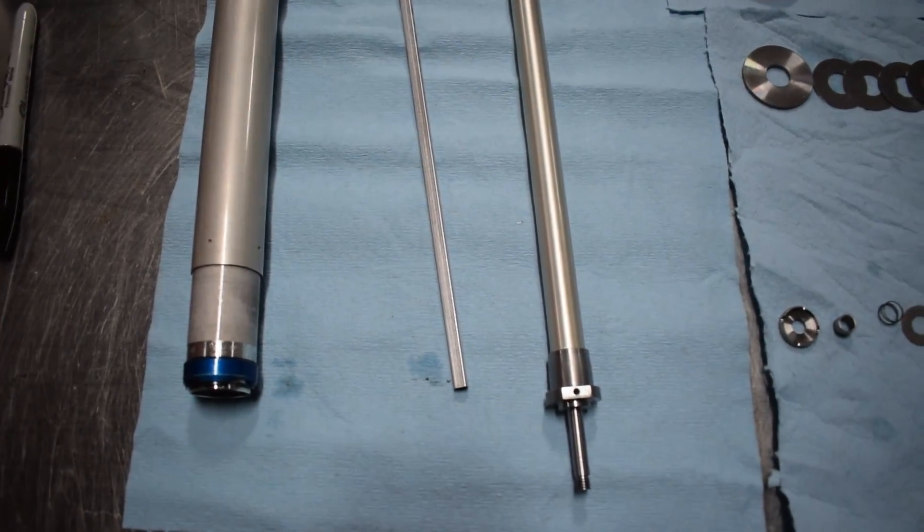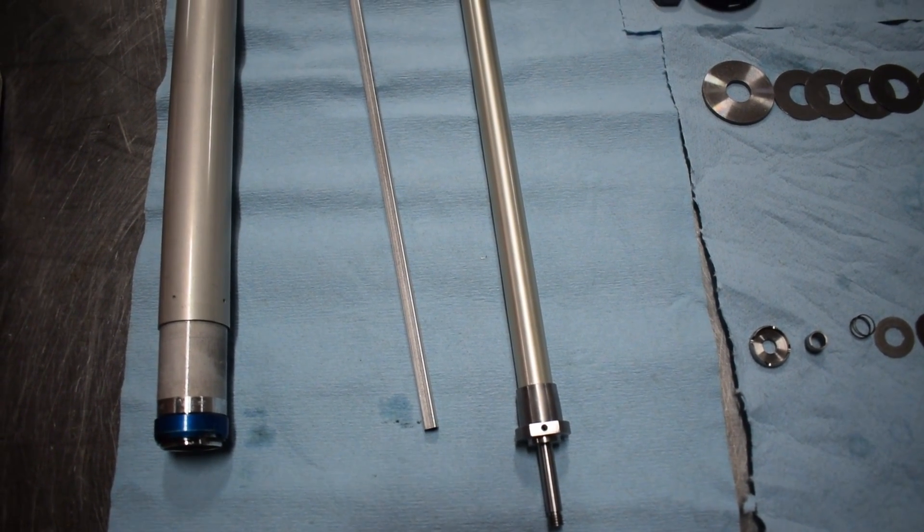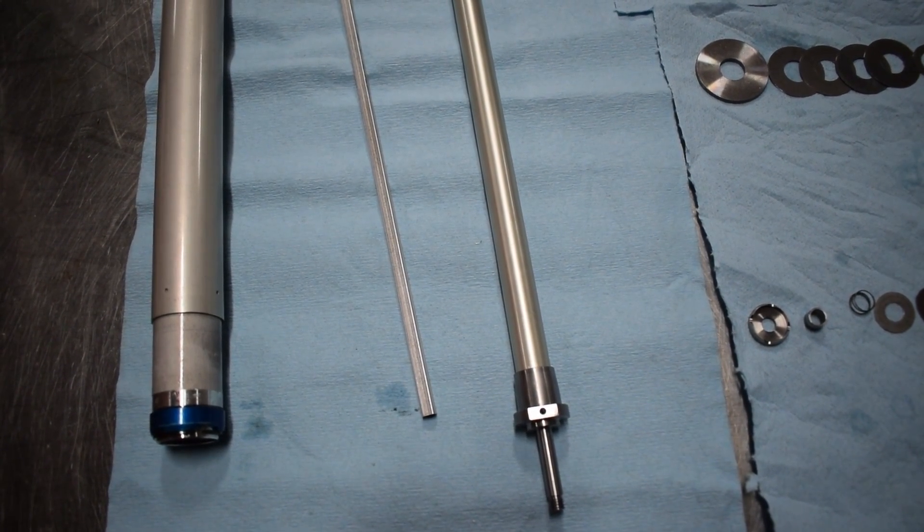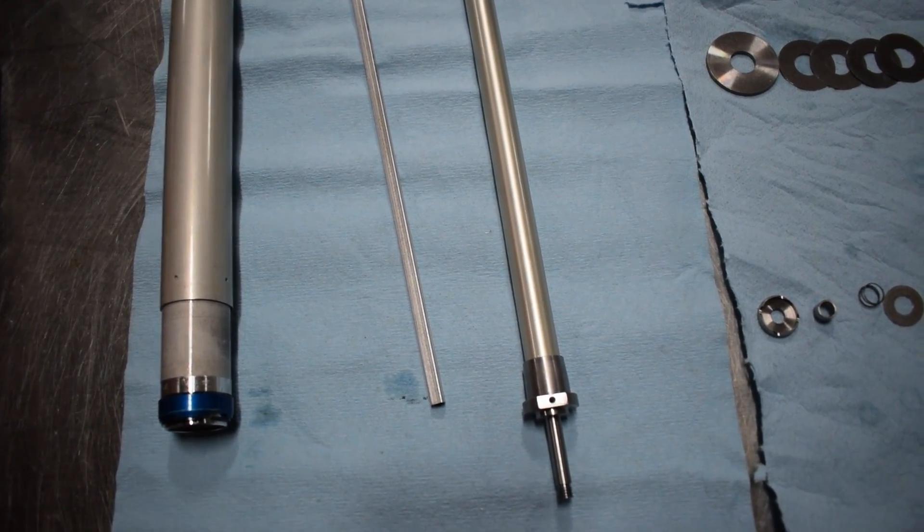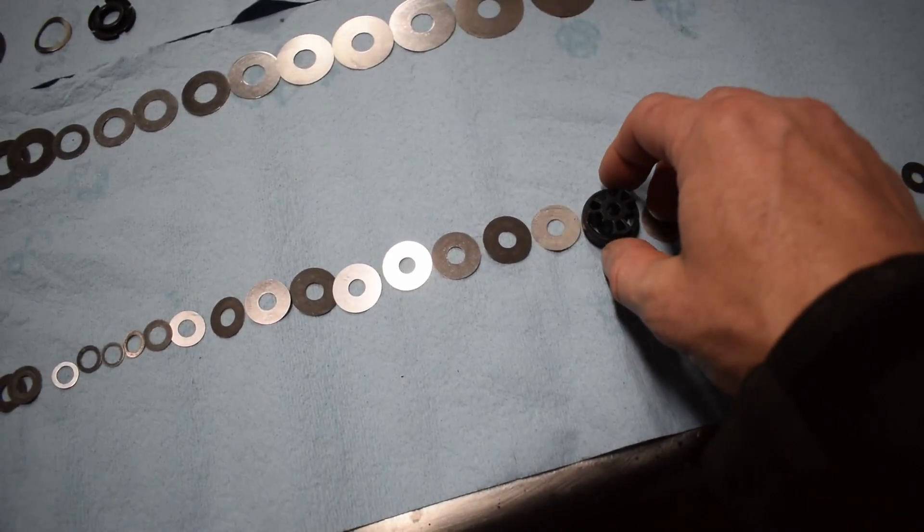If you go watch another video of mine that happens to be on this channel, we'll put a link in the description, we have a KYB fork apart in its pieces. You can see the entire KYB fork. So why don't you go make a determination for yourself if you can tell a difference between the parts and pieces.